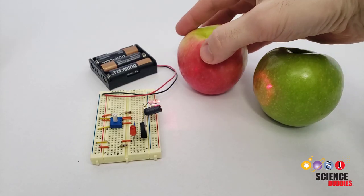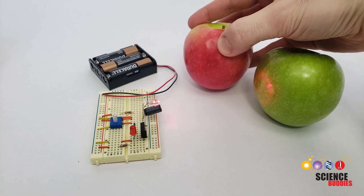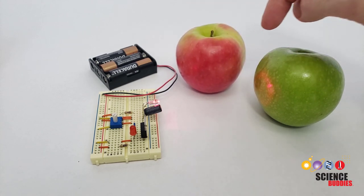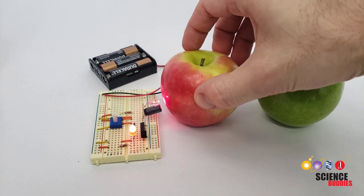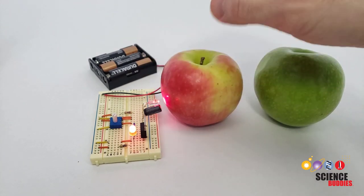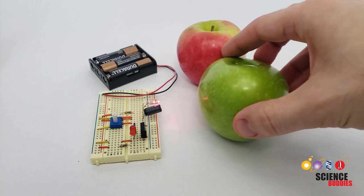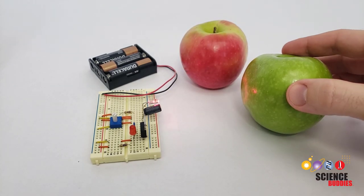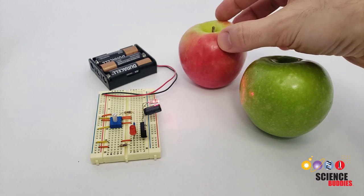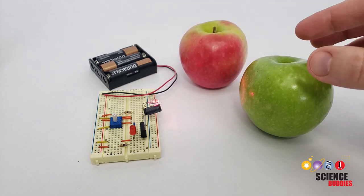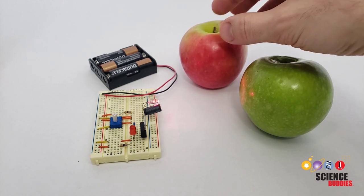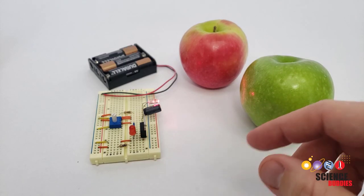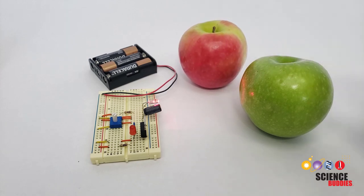I had mentioned back at the beginning of the video that one potential application here is agriculture. For example, looking at produce. Here I have a red apple and a green apple. And if I hold the red apple up to the circuit, we see it responds and lights up the LED. But if I hold the green apple up, it does not. Here I just have two completely different types of apples, but you can imagine that if you had something that changes from green to red as it ripens, like a strawberry or a tomato, you could use this circuit to automatically detect when it is ripe and ready to harvest.